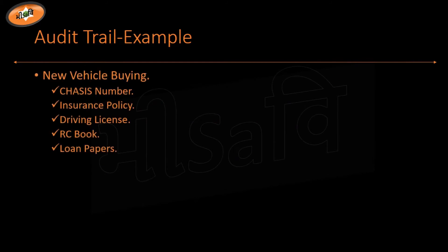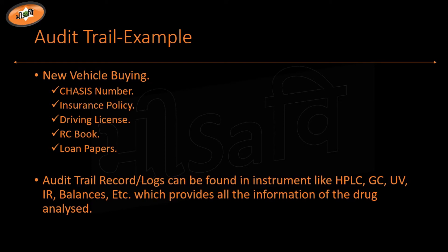For an example, chassis number, insurance policy, driving license, RC book, loan papers — all these are the metadata and represent an audit trail for a vehicle. Also, audit record logs can be found in instruments like HPLC, GC, UV, and balances, which provides all the information of the drug analyzed — all the record logs and all the information — so we call it audit trail.